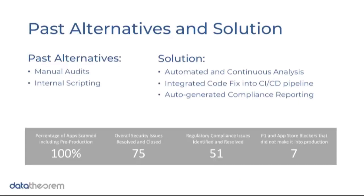Historically they used manual audits and internal scripting to work with all the different development teams. As you can imagine, with multiple development teams and a very manual process, they became the bottleneck for a modern-day release cycle. With organizations releasing builds nightly, having to go through manual audits and scripting across multiple teams becomes very time-consuming and leads to a difficult relationship between security and development teams.